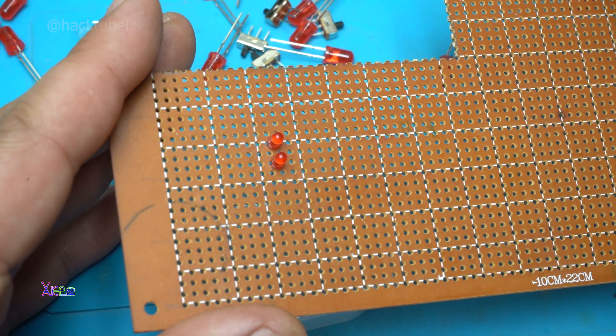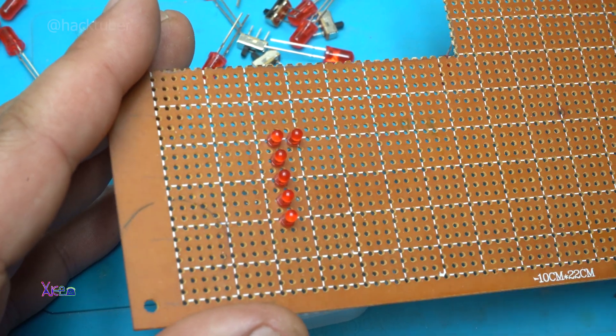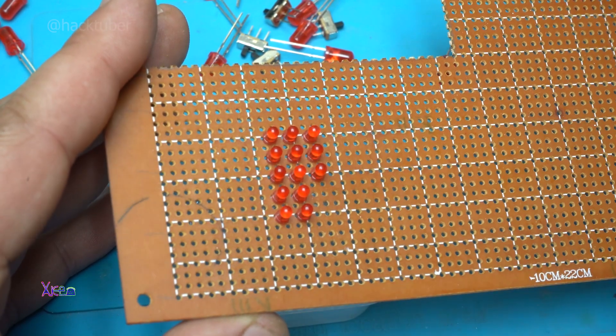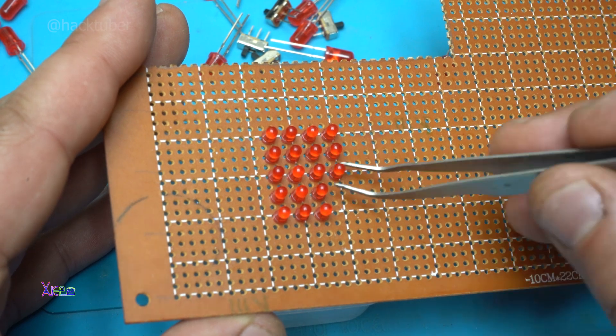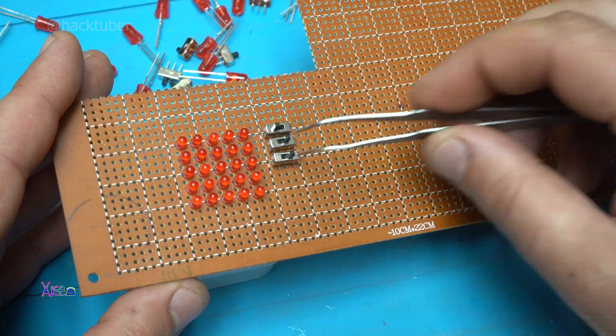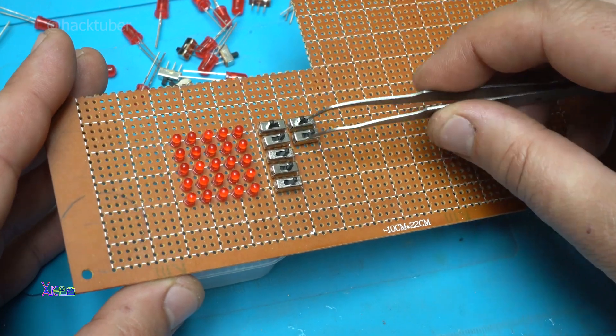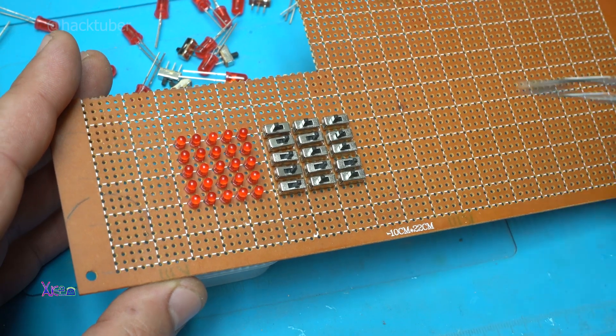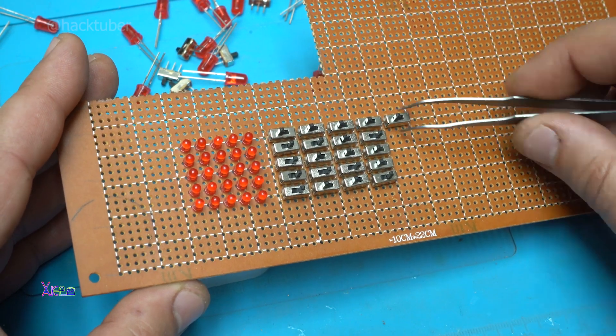I start the project with placing all 25 red LEDs, 3mm, placing on the universal breadboard. Also placing 25 mini micro switches, 3 pin switches, and also placing 6 resistors with 100 ohms.